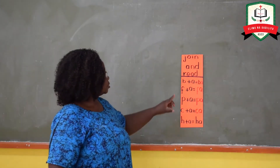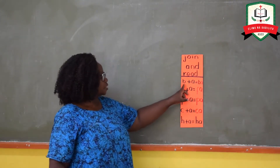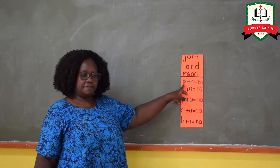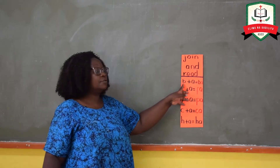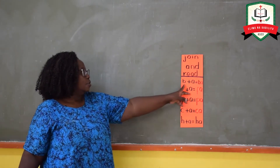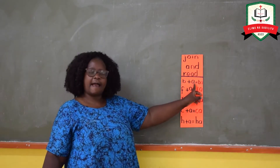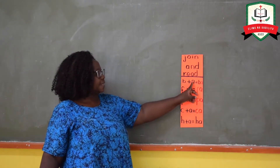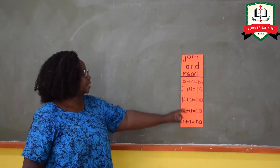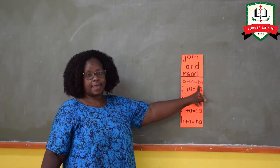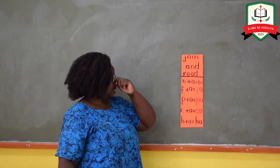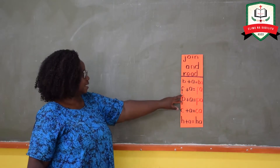Now I want you to look here and tell me which sound can you see here? Bu. Very good. This is sound bu. When we take sound bu we add sound a. Bu and a — when we put them together it says ba. Everybody say ba. That is good.